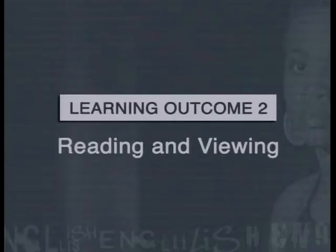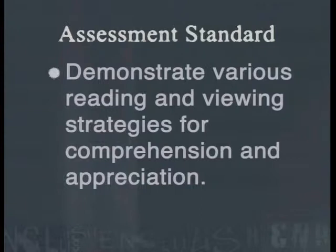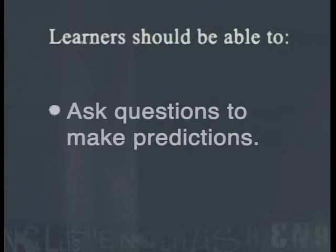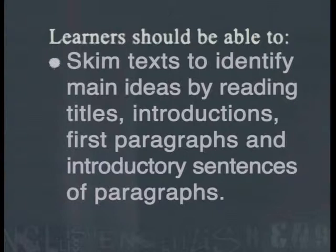The following lesson is linked to Learning Outcome 2, Reading and Viewing. It addresses the assessment standard that requires learners to demonstrate various reading and viewing strategies for comprehension and appreciation. Learners should be able to ask questions to make predictions and skim texts, and to identify main ideas by reading titles, introductions, first paragraphs and introductory sentences of paragraphs.